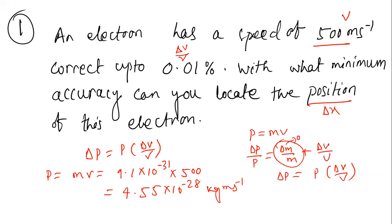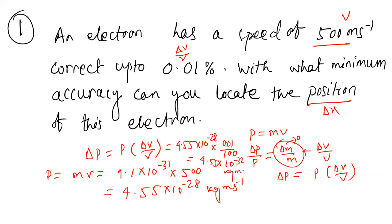We calculate Δp = p × (Δv/v) = 4.55 × 10⁻²⁸ multiplied by 0.01/100, which gives Δp = 4.55 × 10⁻³² kg·m/s.